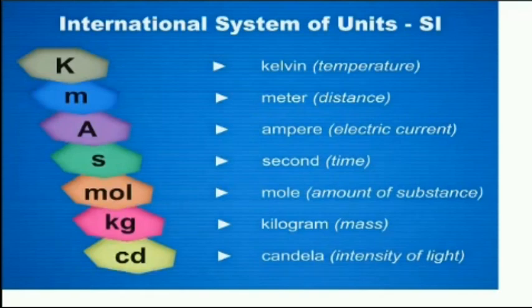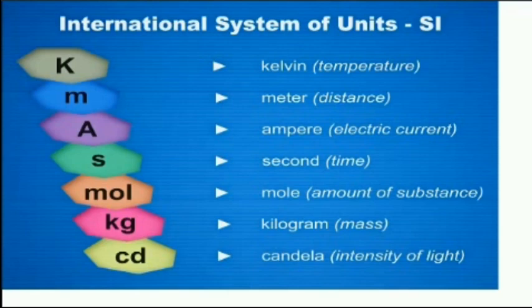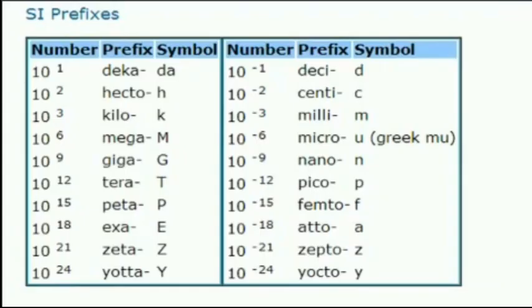The SI system uses: kelvin for temperature, meter for distance, ampere for electric current, second for time, mole for amount of substance, kilogram for mass, and candela for intensity of light. The SI prefixes are shown in this slide.